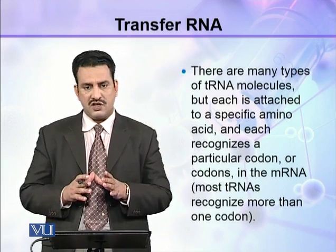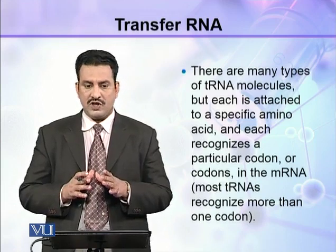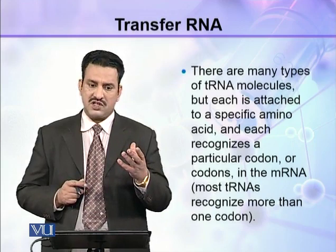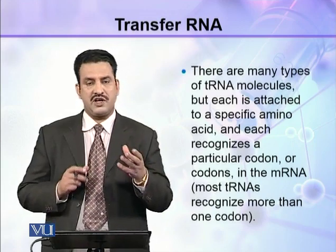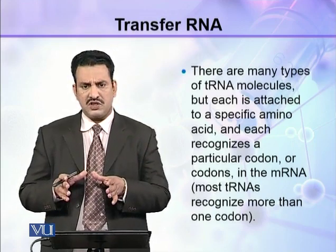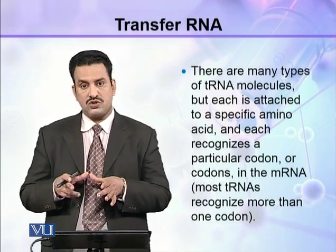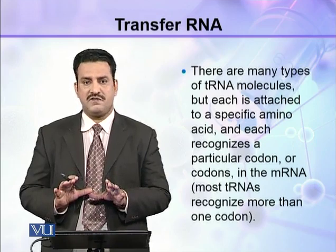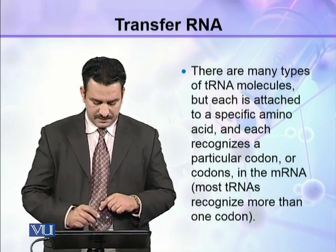Her tRNA jo hai woh ek khaas qisam ke amino acid ke saath attach hoga aur ek khaas qisam ke ya do teen qisam ke codons ko hi identify karega. (Each tRNA will attach to a specific type of amino acid and will identify only one, two, or three types of codons.)